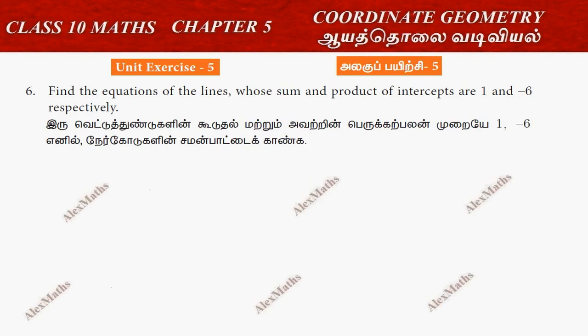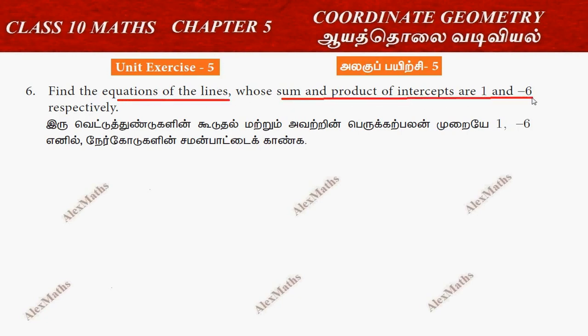Hi students, this is Alex here. Unit exercise question number 6: Find the equation of the lines whose sum and product of the intercepts are 1 and minus 6.